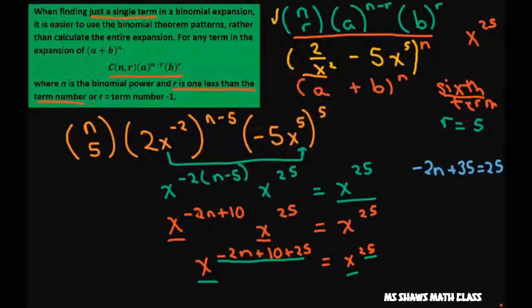Subtract 35 from both sides, we have negative 2n equals negative 10. Divide both sides of the equation by negative 2, and you get n equals 5.